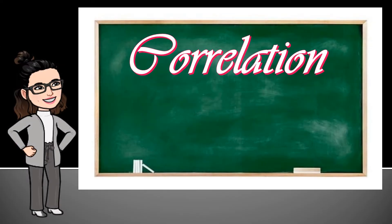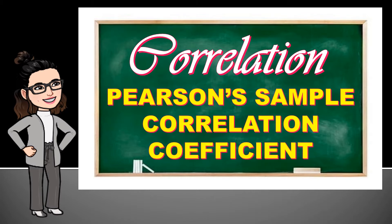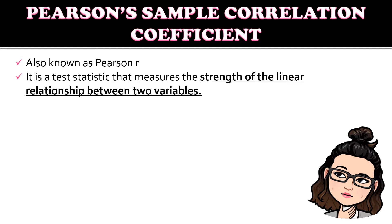For today's topic, it's still under correlation and we will be discussing Pearson's sample correlation coefficient. The Pearson's sample correlation coefficient is also known as the Pearson R. It is a test statistic that measures the strength of the linear relationship between two variables.